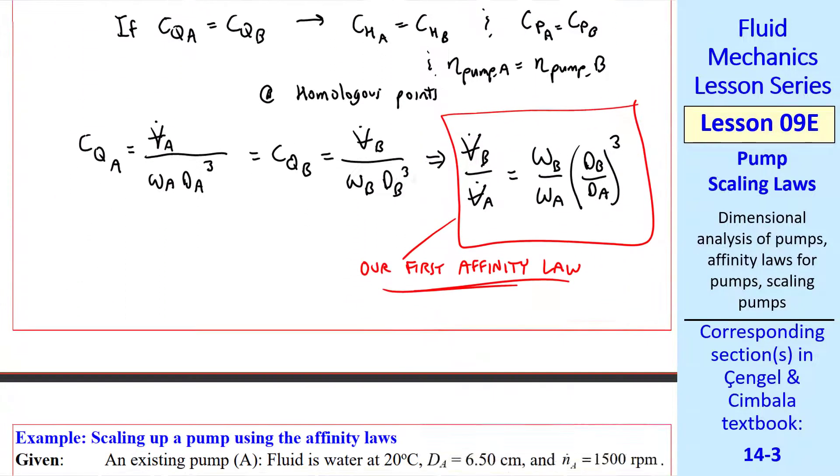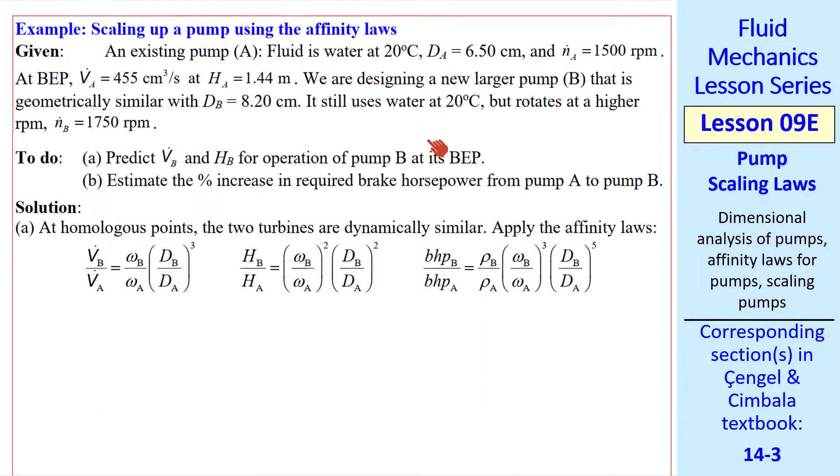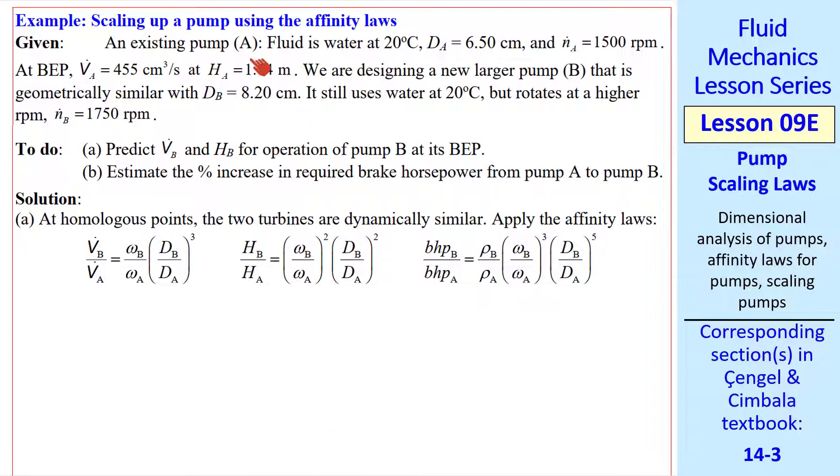Let's do an example problem, scaling up a pump using these affinity laws. We have an existing pump A. We give DA the rotation rate in RPM, and these values at BEP. We want to design a new larger pump, I'll call B, that's geometrically similar with a bigger diameter, using the same fluid but rotating at a higher RPM as well. Let's predict the volume flow rate and the net head for pump B at its BEP, and let's estimate the percent increase in required brake horsepower from pump A to pump B. Here's our affinity laws. We'll apply these at homologous points where the two turbines are dynamically similar.